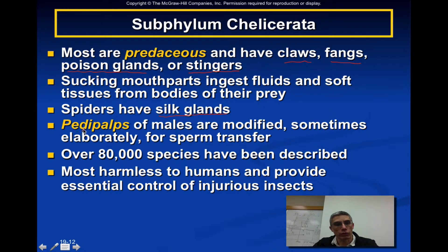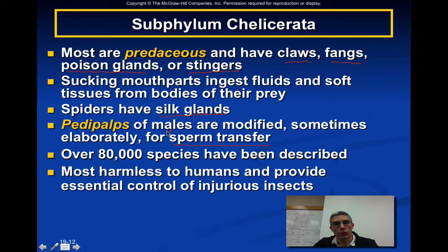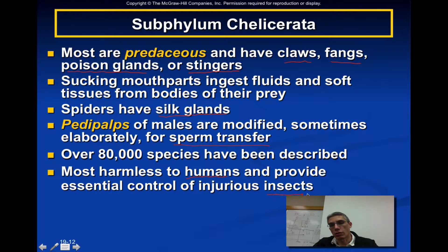Sometimes males have modified pedipalps, which they use to actually transfer sperm to the female, so they're used differently than in females. There are about 80,000 species of arachnids discovered so far. Most are considered harmless to humans, but many of them provide essential control of different types of insects in our environment.